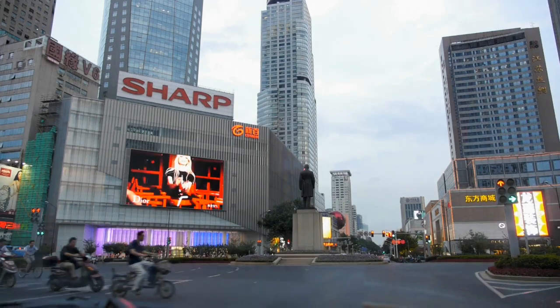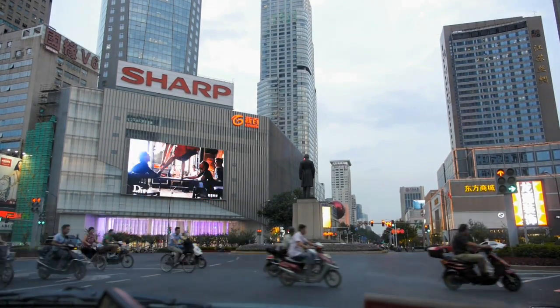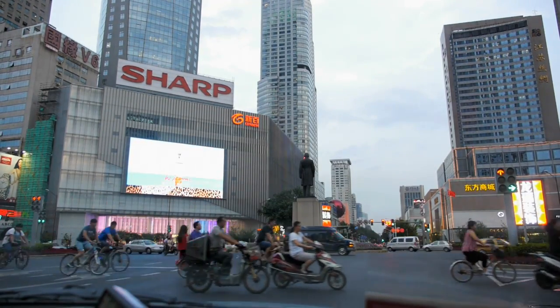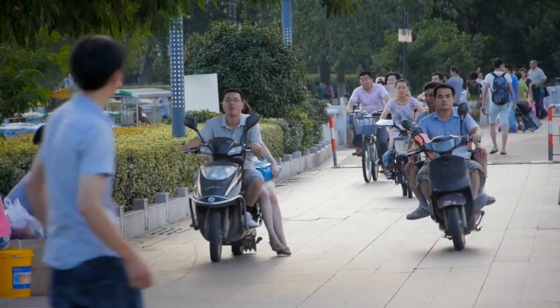One area the team at Angstrom Materials is excited about is alternative energy. They are currently working to create a better battery for electric vehicles. In China alone, they produce 35 million electrical bikes a year. And unfortunately, 80% of the batteries used in those electrical bikes are still lead-acid batteries.